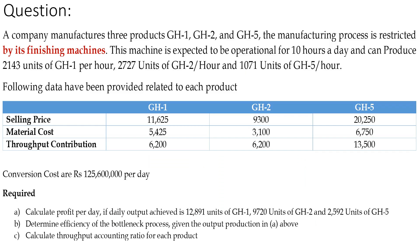The question: a company manufactures three products — GH1, GH2, and GH5. The manufacturing process is restricted by its finishing machines (the bottleneck). This machine is expected to be operational for 10 hours a day and can produce 2,143 units of GH1 per hour, 2,727 units of GH2 per hour, and 1,071 units of GH5 per hour. The following data have been provided related to each product — GH1, GH2, and GH5.